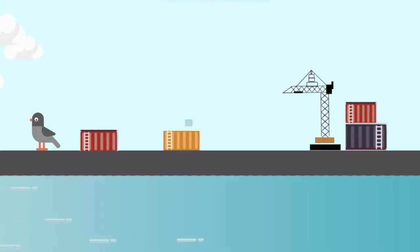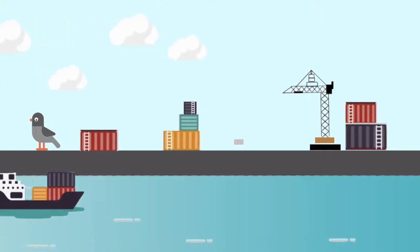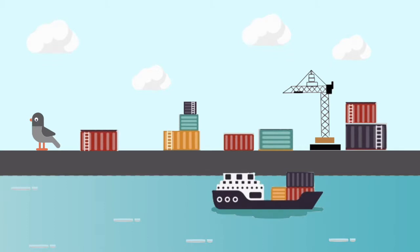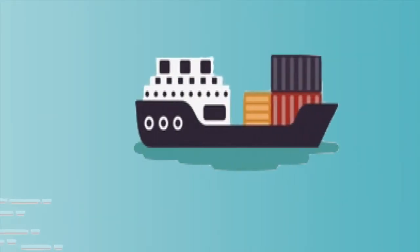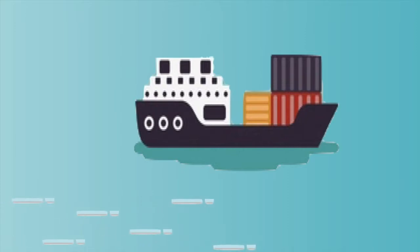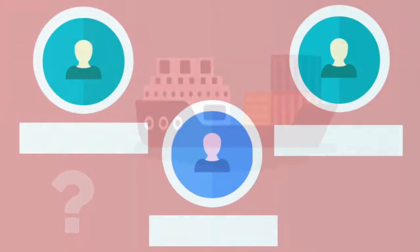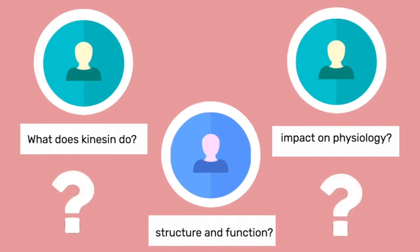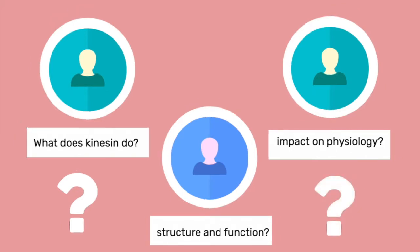Every day, 52,000 ships sail the sea and get one thing from one location to the next. A protein that acts very much like a cargo ship — my protein of interest is kinesin. What does kinesin do, and how does its structure affect its function? Moreover, how does kinesin's function affect human physiology? Let's jump right in.